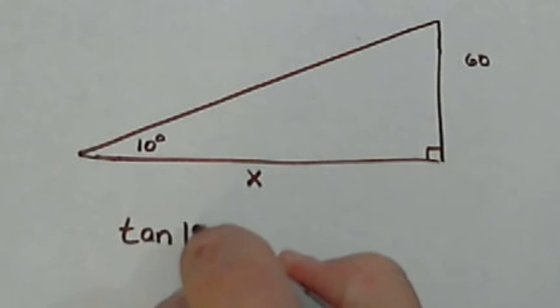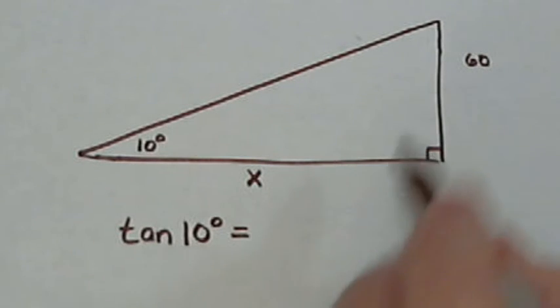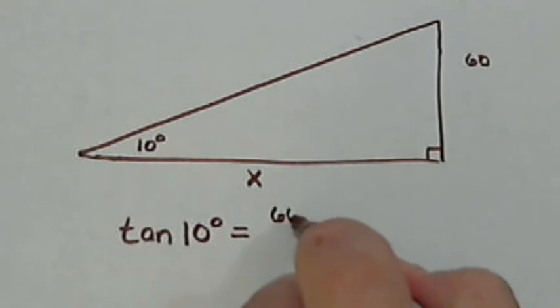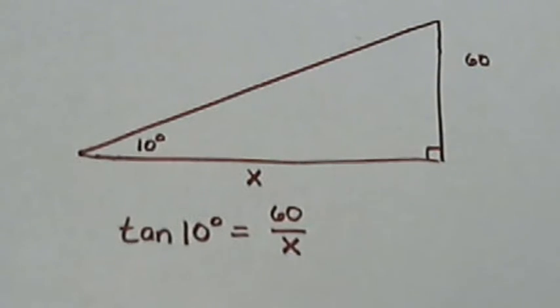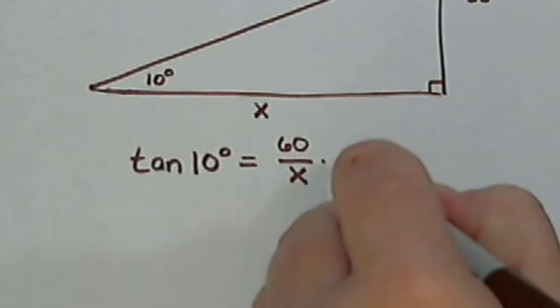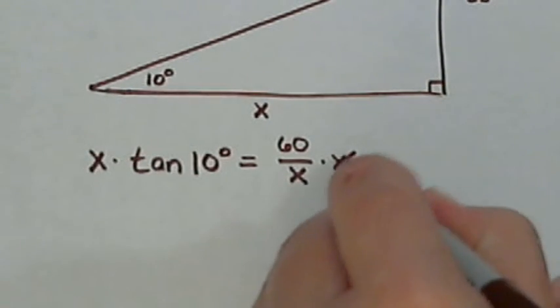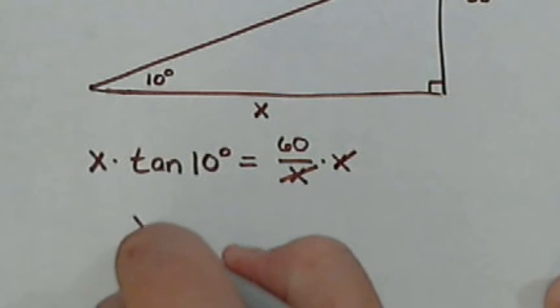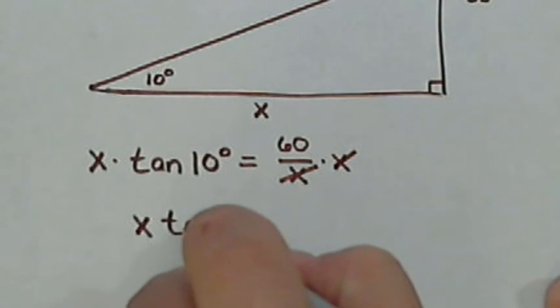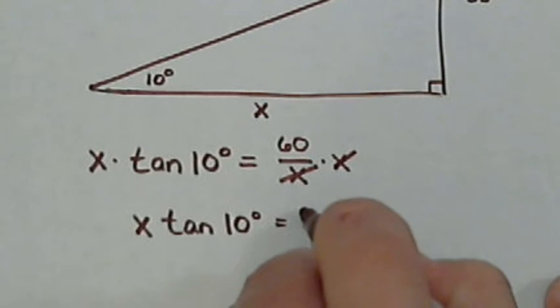So what we have is that tangent of 10 degrees is the opposite 60 over the adjacent which is x. So to solve this we're going to multiply both sides by x. So the x is cancelled and we have x times tangent of 10 degrees equals 60.